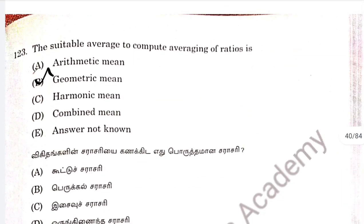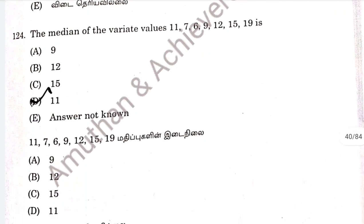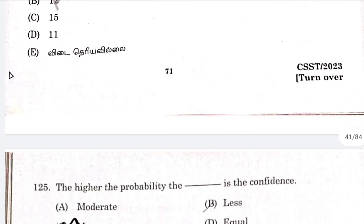Question 123: the suitable average for computing the average of ratios is option B — geometric mean. Question 124: the median of the variance values. Option D, 11. Question 125, option D — this is an easy question.